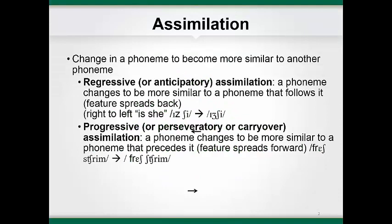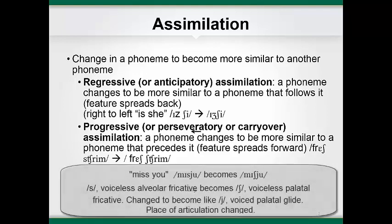The first connected speech process I will review is assimilation. Assimilation occurs when a phoneme changes to become more similar to another phoneme, usually a neighboring phoneme. For example, when I pronounce the phrase "miss you" as "miss you," the s sound in "miss" becomes a sh sound and changes its place of articulation from alveolar to palatal. If we examine the surrounding phonemes, we can see that the y sound in "you" is also a palatal sound. So we can conclude that the change in the s sound to sh made the phoneme become more similar to the upcoming y sound, making this an example of assimilation.